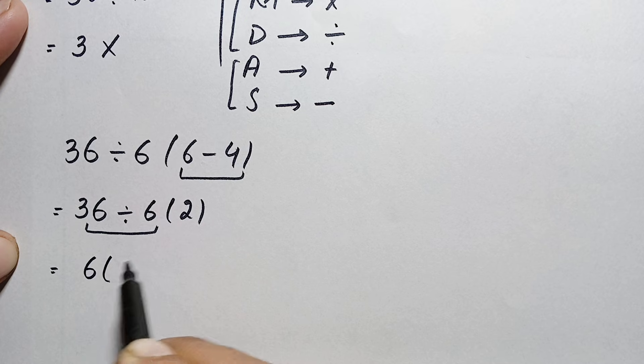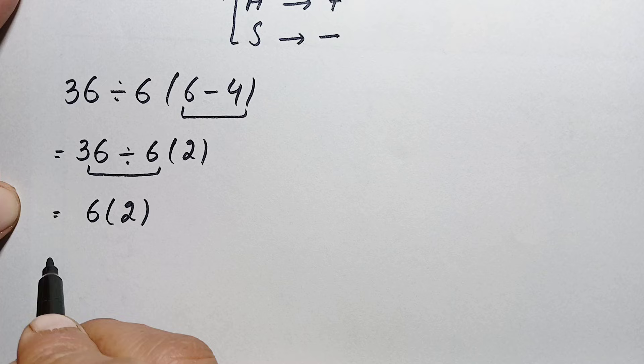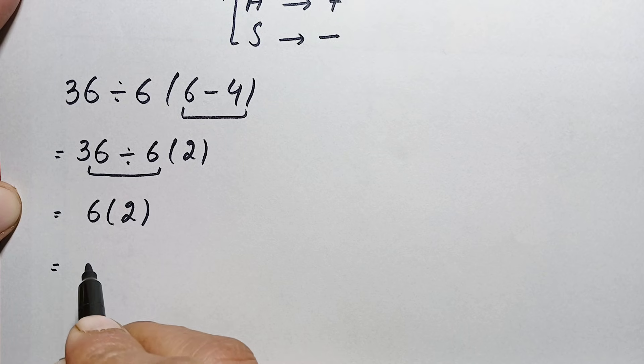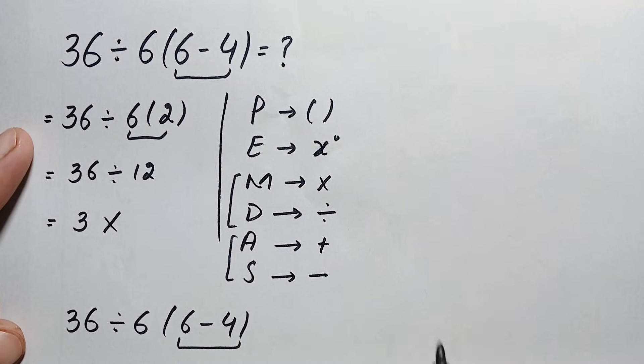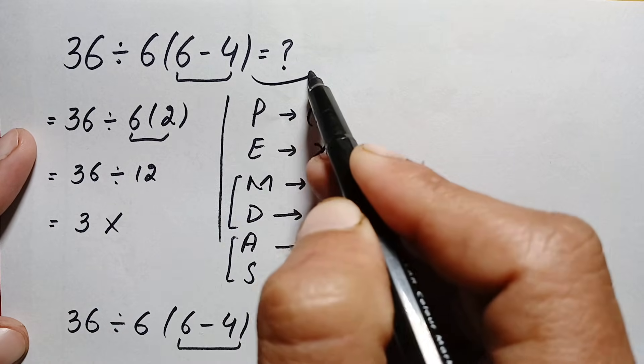Here we have only one operation, multiplication, so 6 times 2 is 12. So 12 is our correct answer. Finally, the answer to this problem, 36 divided by 6 times 6 minus 4, is simply 12.